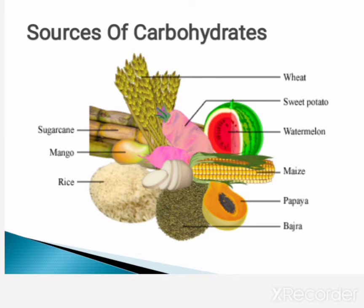First, we see sources of carbohydrates. Can you name some major sources of carbohydrates we get from plants? Some plant sources of carbohydrates are potato, sweet potato, sugar cane, papaya, watermelon, mango, wheat, rice, maize, bajra, etc. All these are plant sources of carbohydrates.